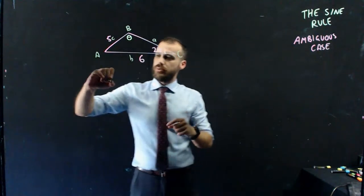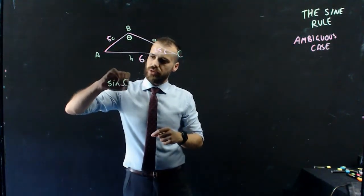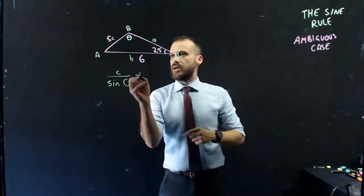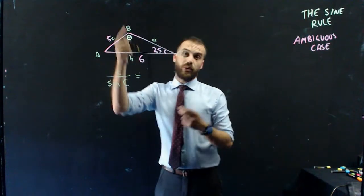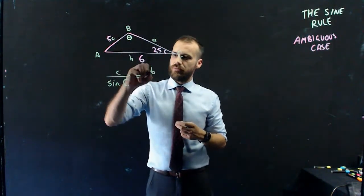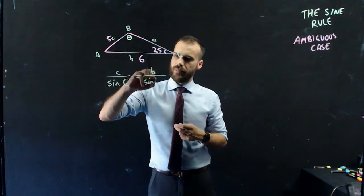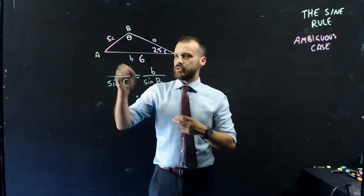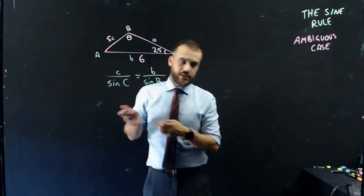So we know C, so we're going to use sine C. And we know B and we want to know B, so we're going to use that: B over sine B. We're going to put in all of the stuff we know, and then we're going to get an answer.